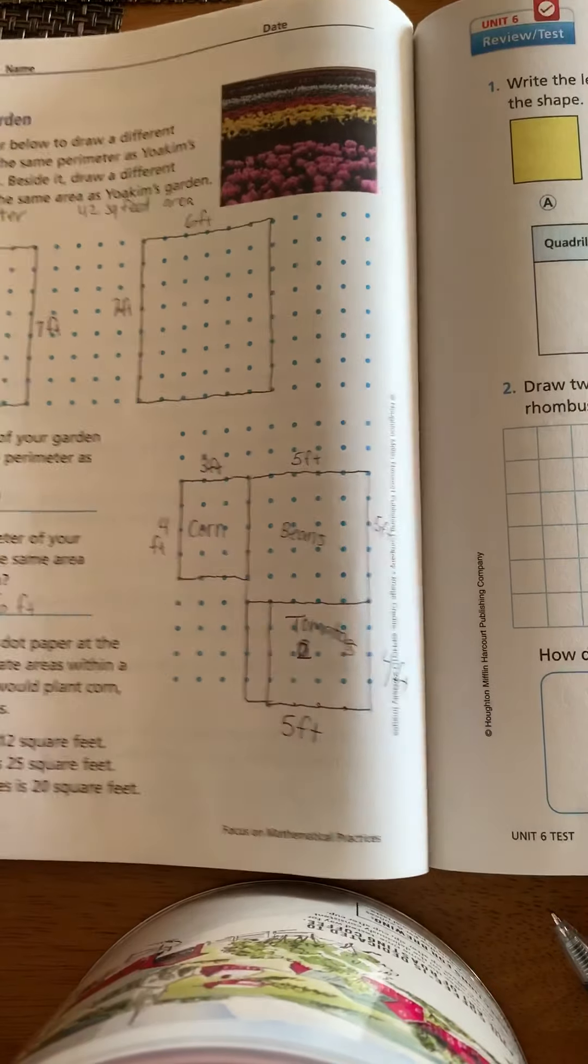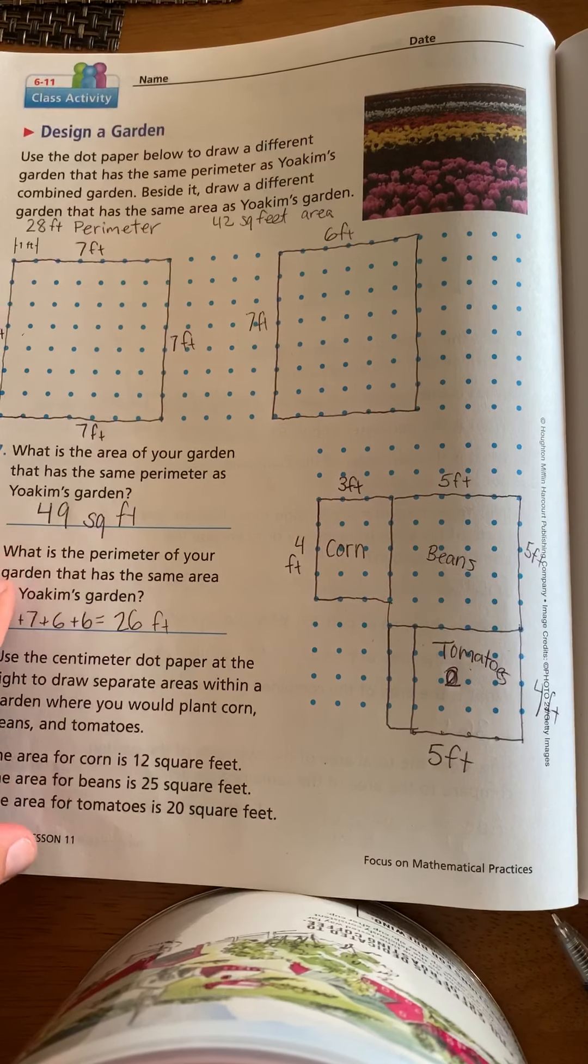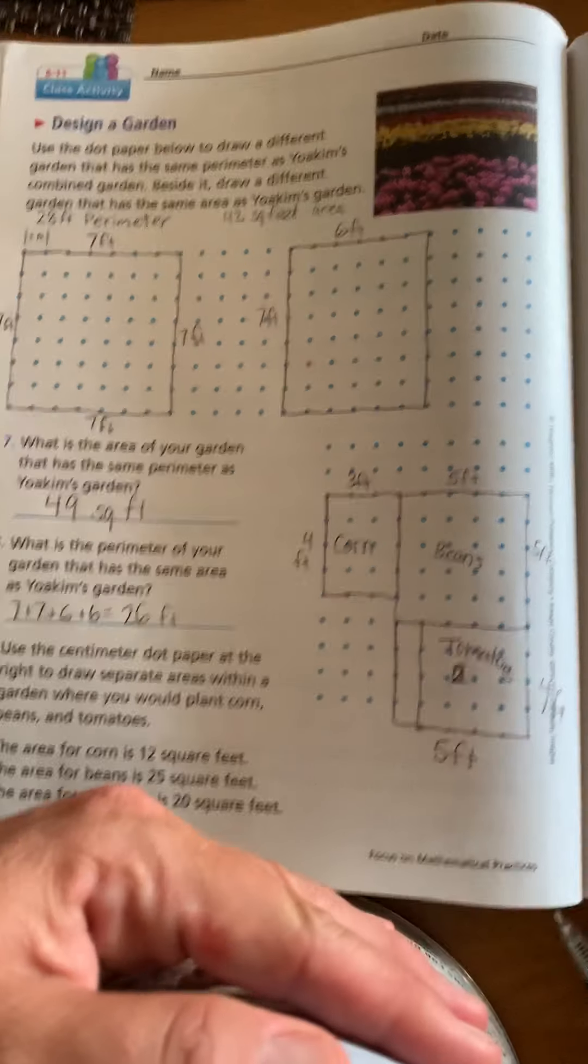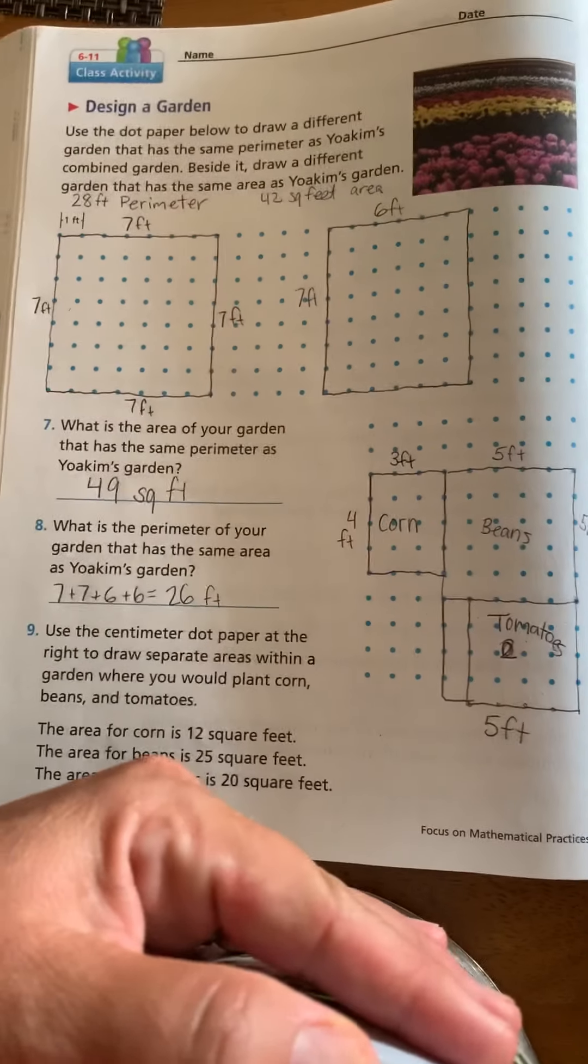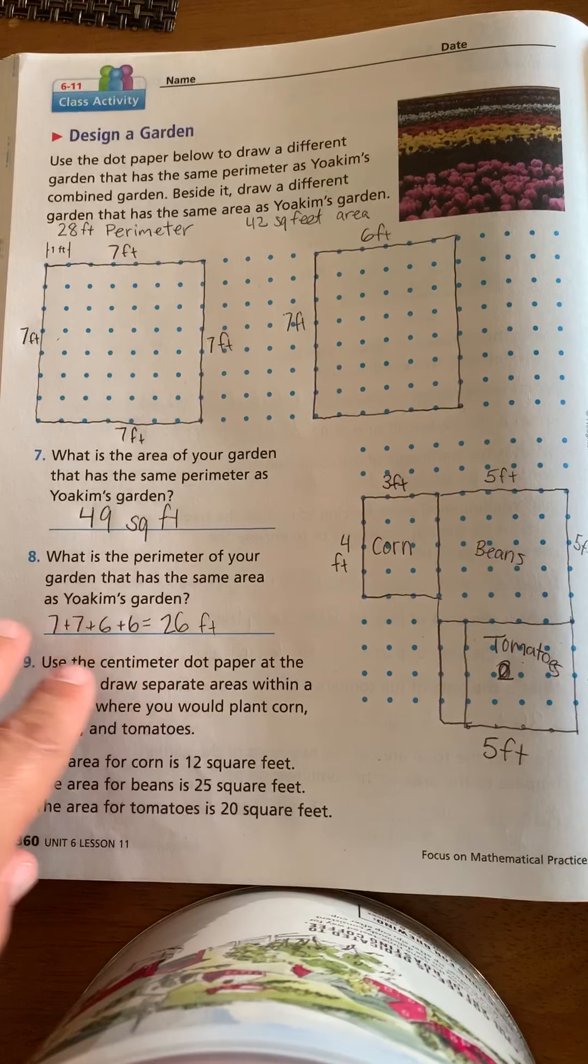All right. Next side, design a garden. Use the dot paper to draw a different garden that has the same perimeter as Joaquin's combined garden.